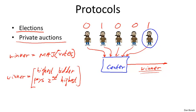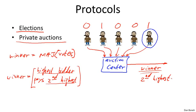The only things made public are the second highest bid and the identity of the highest bidder. We introduce an auction center where everybody sends their encrypted bids; the auction center computes the winner's identity and the second highest bid. But other than these two values, nothing else is revealed about the individual bids.